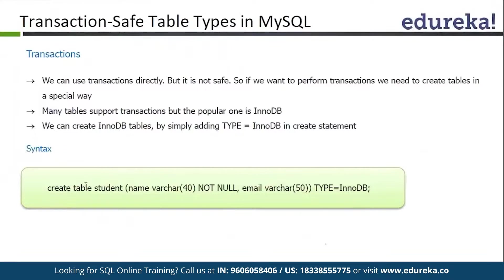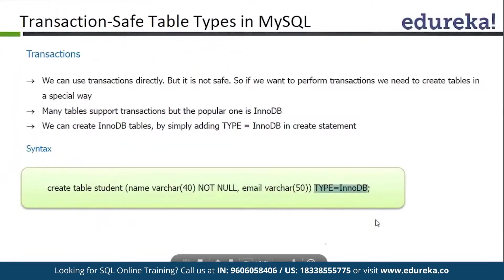Here you can see we are using CREATE TABLE student. We are giving the column name, column type and size, NOT NULL, email, column type, size, and type of table. Here we are giving ENGINE = InnoDB. If I don't give this type and we are using MySQL 5.6, it will automatically take InnoDB by default.